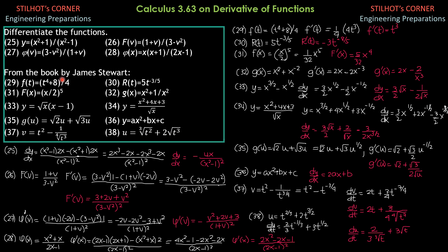From the book by James Stewart: problem 29, F(t) = (t⁴ + 8)/4. Since 1/4 is a constant, the derivative equals (1/4) times the derivative of (t⁴ + 8), which is 4t³. Simplifying, F′(t) = t³.